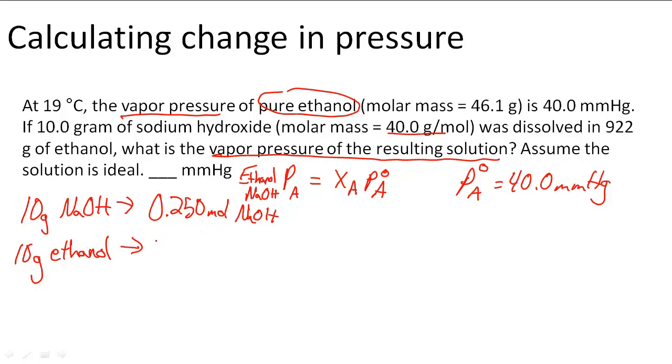Now 922 grams of ethanol is actually going to give us a number of moles of 20.00 moles of ethanol. So there's a lot more ethanol than there is sodium hydroxide.